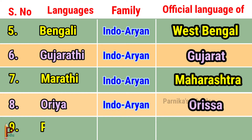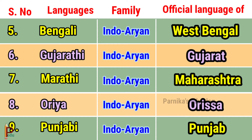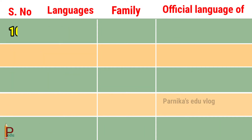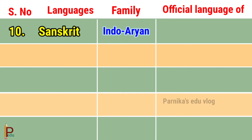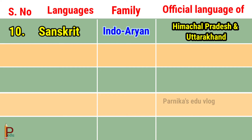Language Punjabi belongs to the Indo-Orient family and is the official language of Punjab. Language Sanskrit belongs to the Indo-Orient family and is the official language of Himachal Pradesh and Uttarakhand.